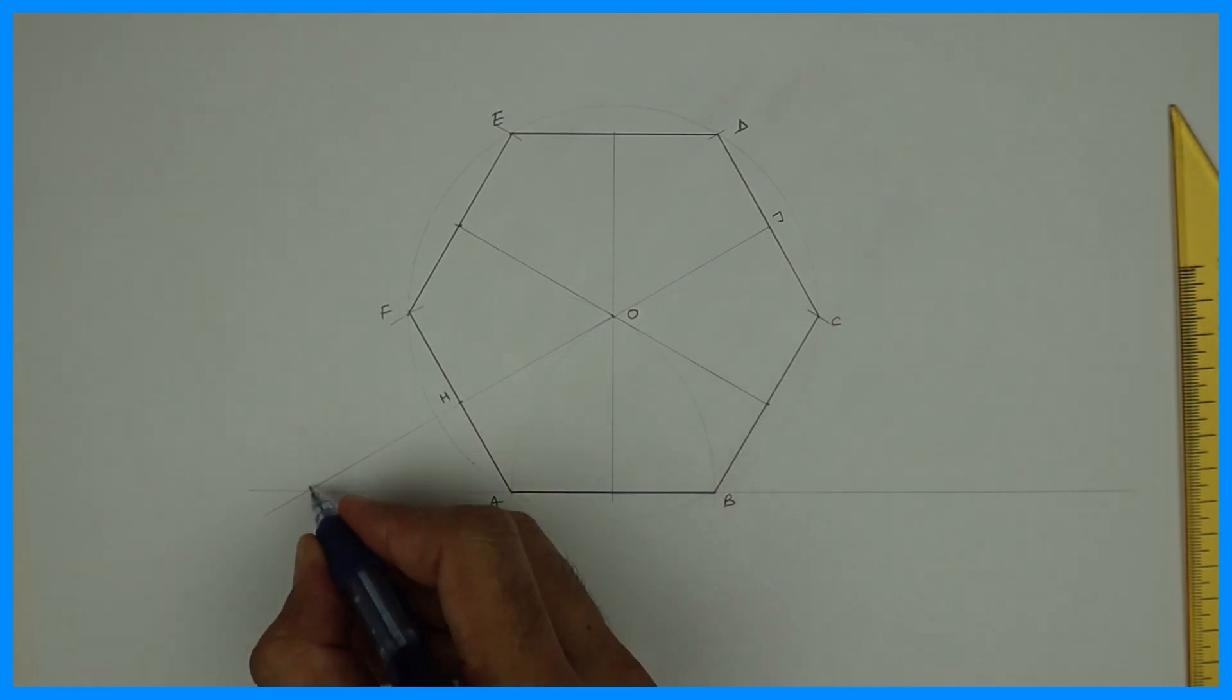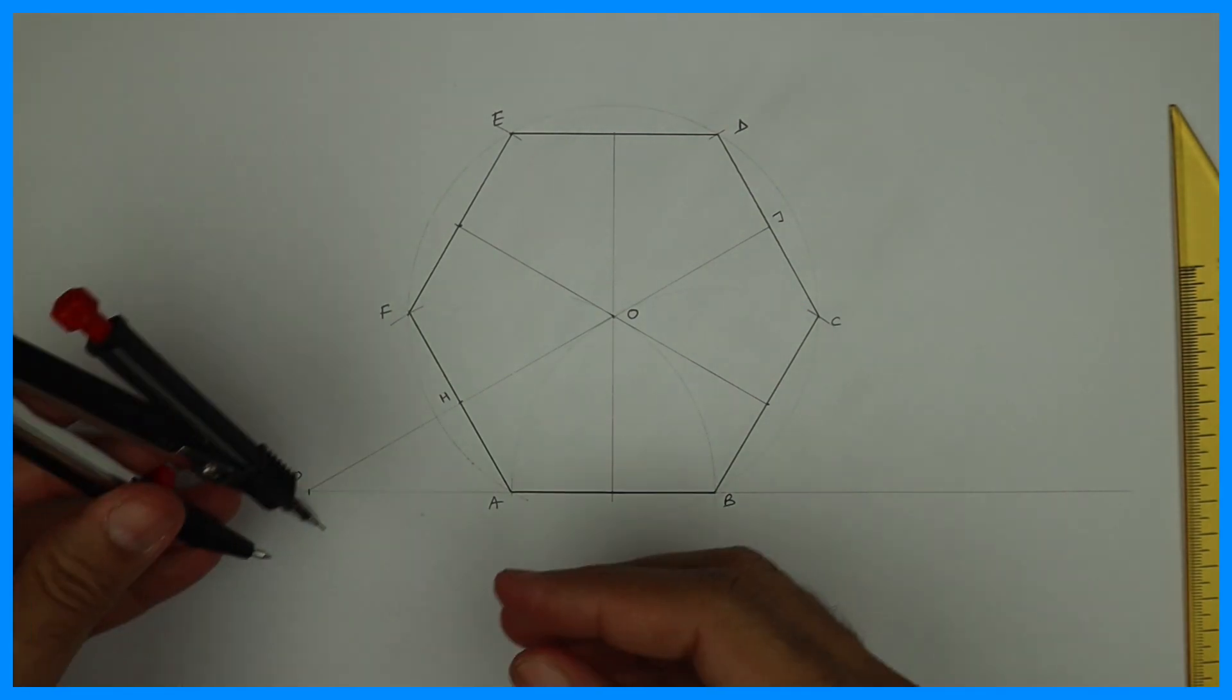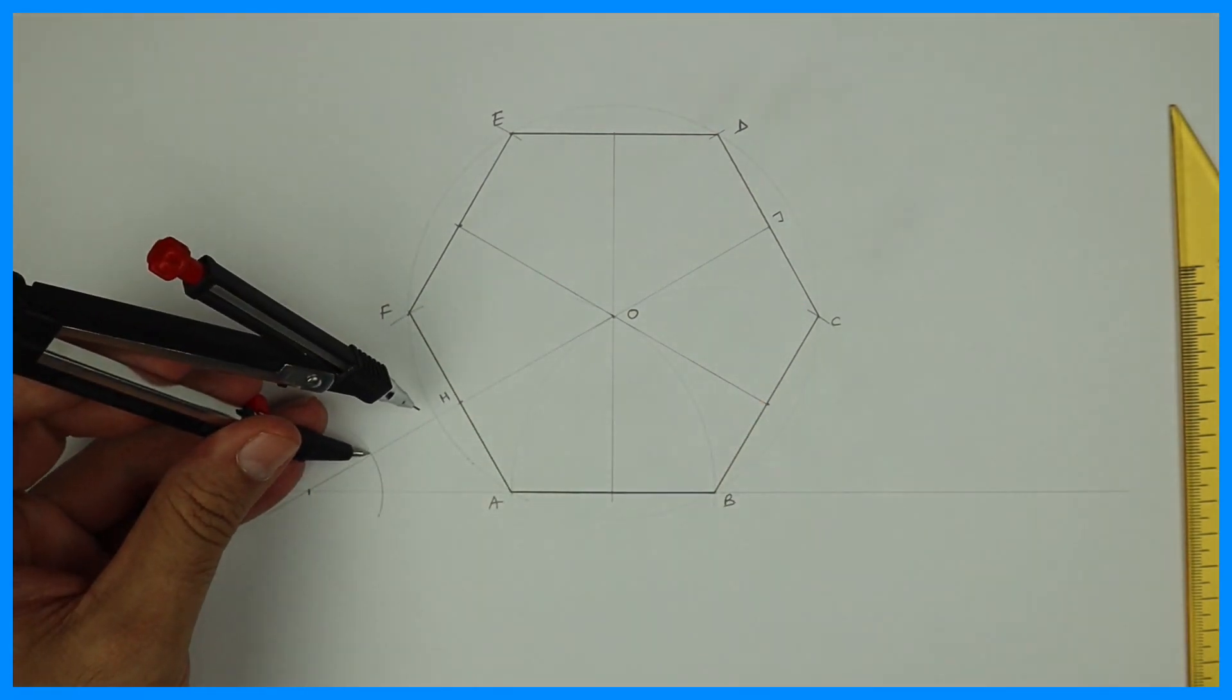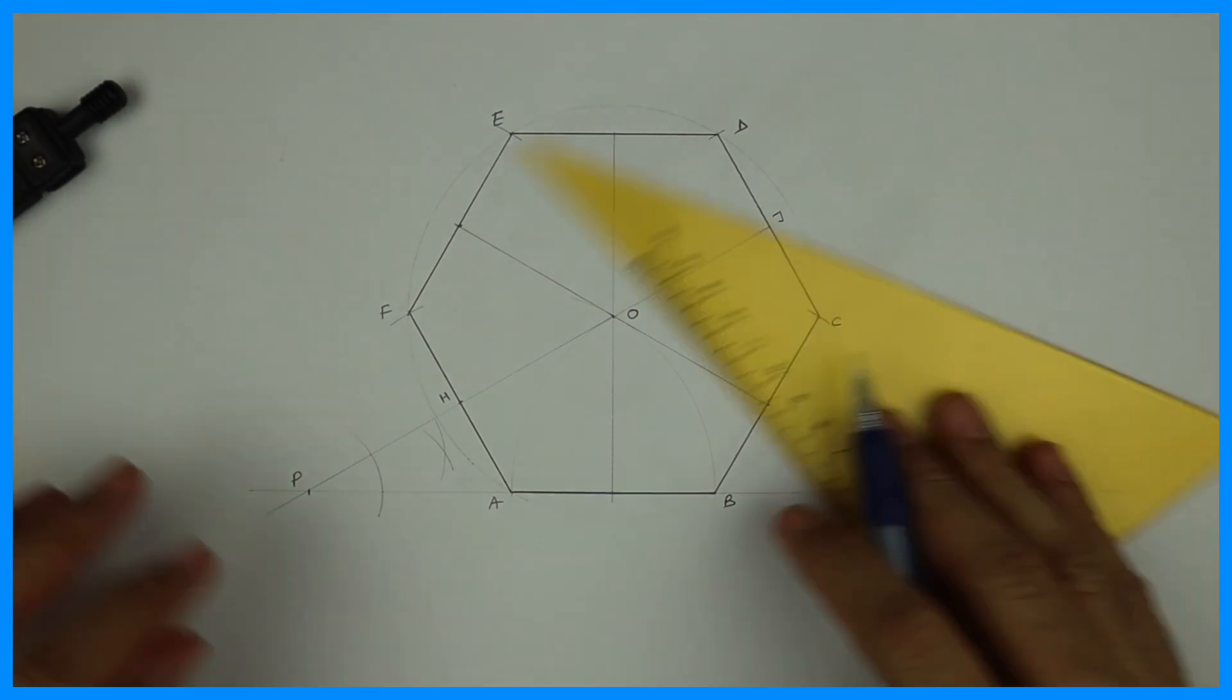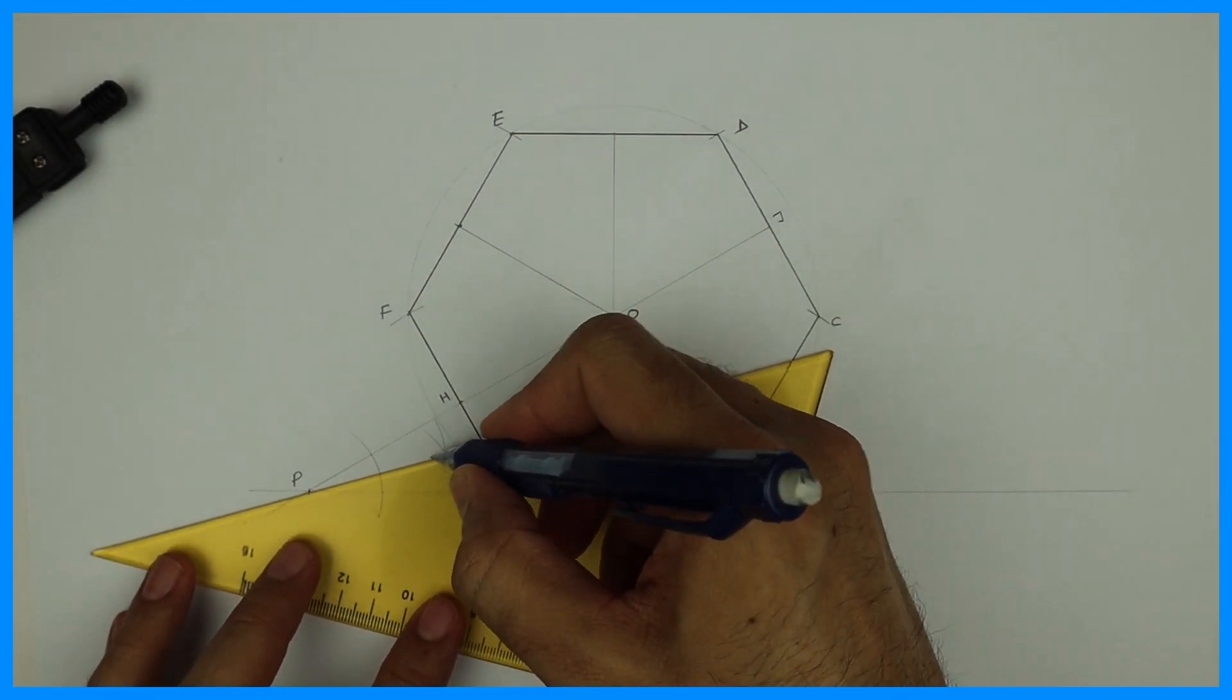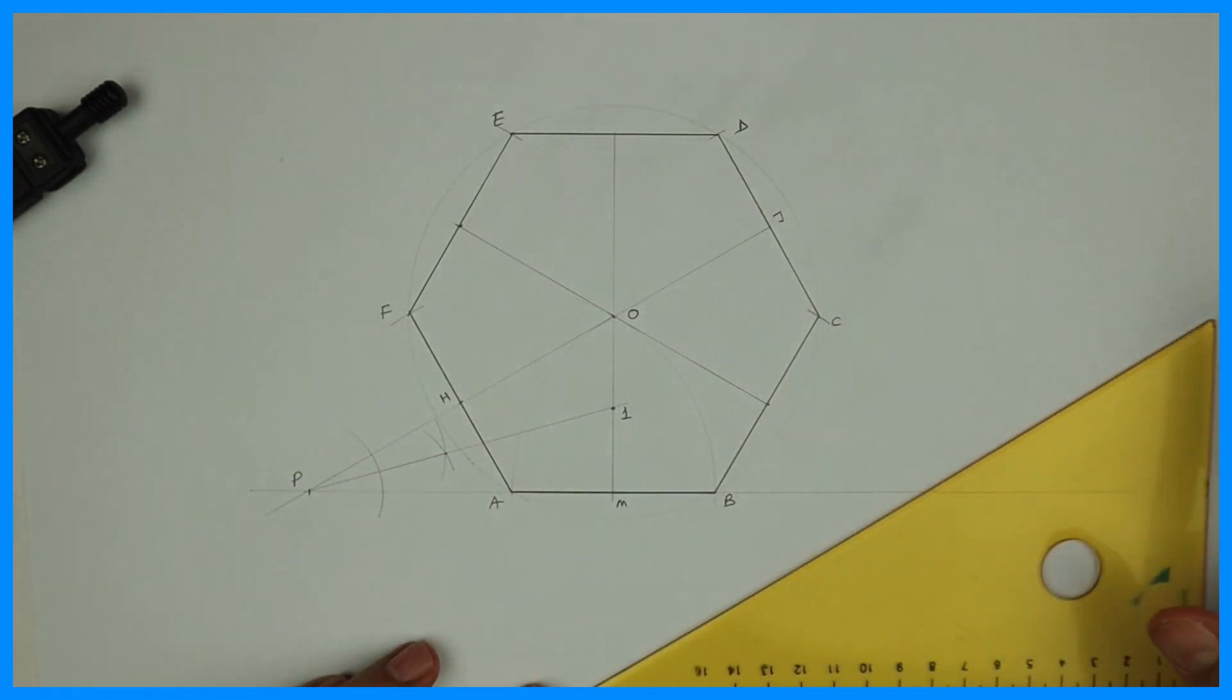Now we'll bisect this triangle OPA. Wherever it cuts, that will be point 1. Take the distance from 1 to M and you can draw a circle.